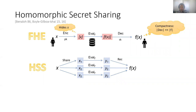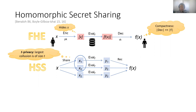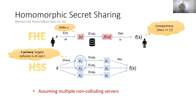HSS can be viewed as a distributed variant of FHE, where instead of encrypting the input, we secret share it between a group of servers. We say that the HSS has privacy if any collusion of size T or less learns nothing about the secret input. The downside of HSS compared to FHE is that we need to assume multiple non-colluding servers, but for many applications this is not an issue.